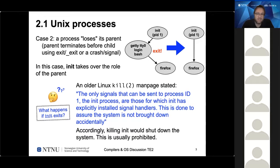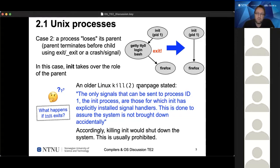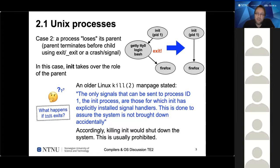If you look at the man page for the kill system call on an older Linux system, it states: the only signals that can be sent to process ID 1 (the init process) are those for which init has explicitly installed a signal handler. Essentially, you can only send signals that init is prepared to handle. Signals that would just kill the process — like signal 9, SIGKILL — are specifically ignored by the kernel to prevent terminating init.